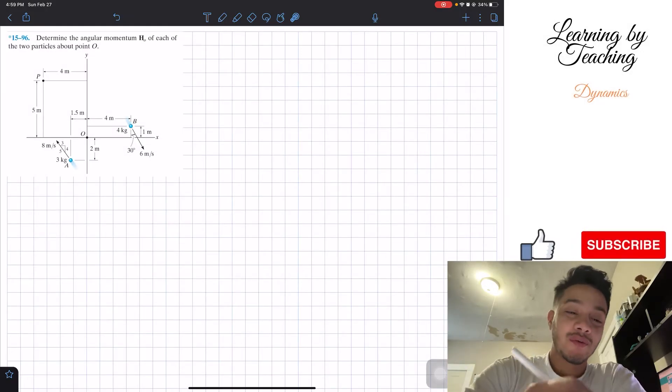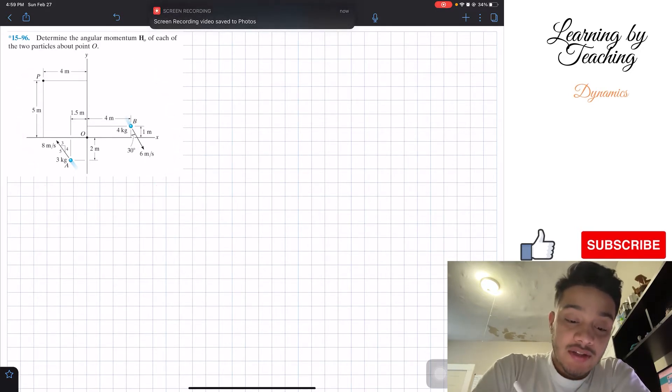Welcome back everyone to learning by teaching. Today we're in dynamics and we're going to solve problem 15.96. Determine the angular momentum H of each of the two particles above point O. So what we have here, we're given particle A and particle B.